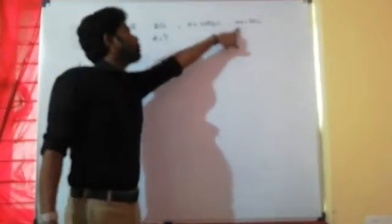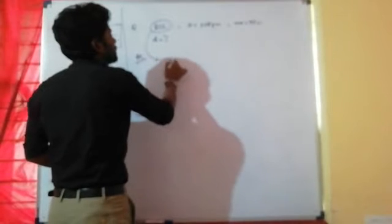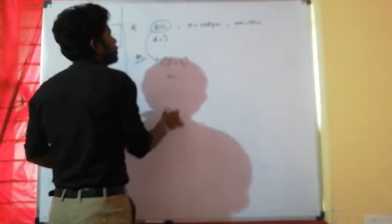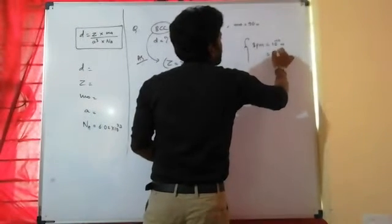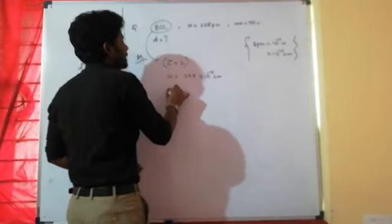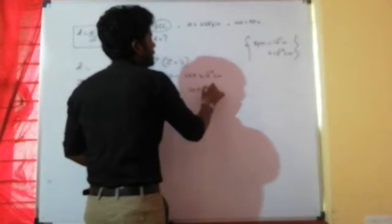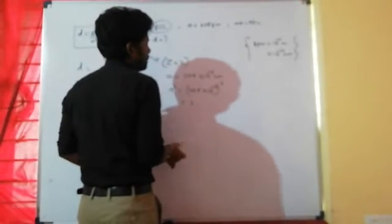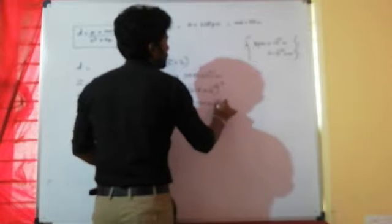For a BCC unit cell, z equals 2. Nₐ is a universal constant: 6.02 into 10 to the power 23. The edge length a is given in picometers and must be converted to centimeters: 208 into 10 to the power minus 10 centimeters. Since 1 picometer equals 10 to the power minus 12 meters, which equals 10 to the power minus 10 centimeters. Now calculate a-cube: 208 into 10 to the power minus 10, whole cube, equals 2.39 into 10 to the power minus 23 cubic centimeters.